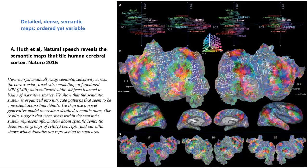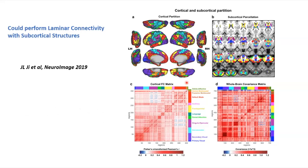With layers you can ask: does chair information in individual voxels correspond to layer 4 activity? Is it coordinated in a subcortical way? It's also important with layers to tie into subcortical structures as modulators of coordinated cortical activity. I would love to have this redone with layer fMRI.